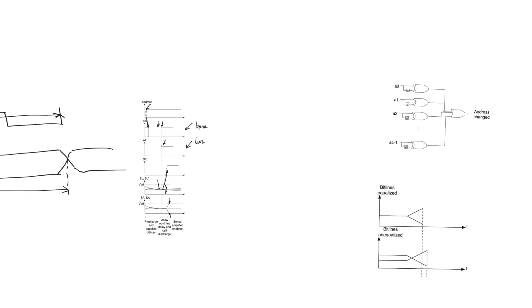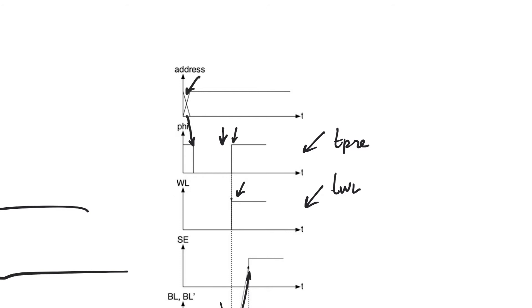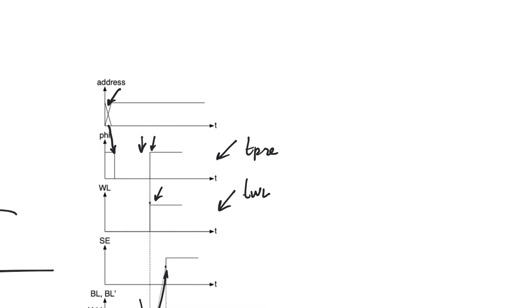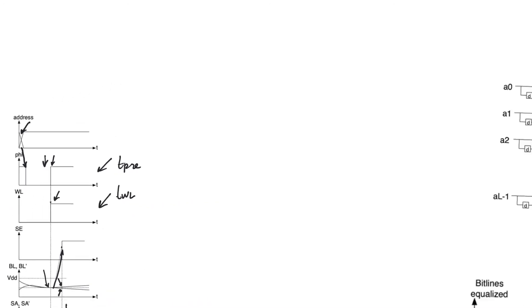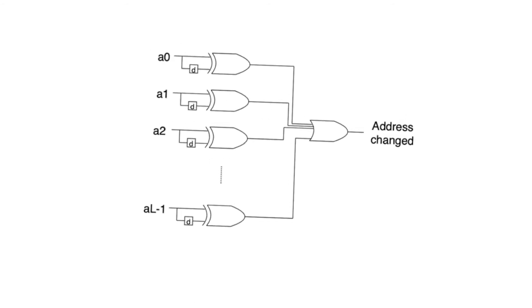What we have to figure out is how to generate all the control signals, given that we only have one real external control signal — the clock that triggers the whole operation. The first control signal we need is one that fires when the address changes, because this is what triggers everything else. We don't need to trigger a read operation on every clock cycle, as that would be wasteful. We need to trigger a read only when the address changes.